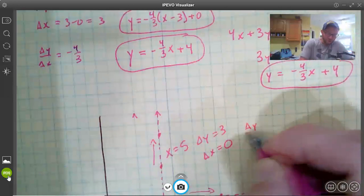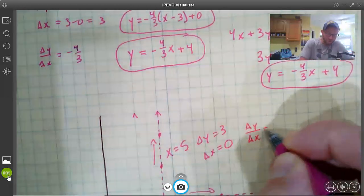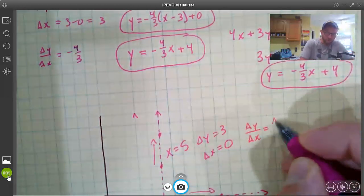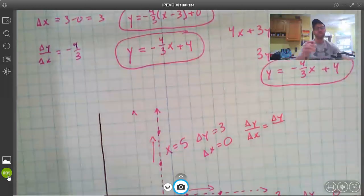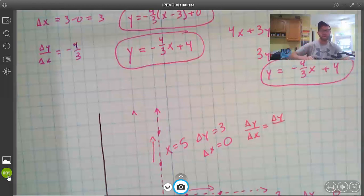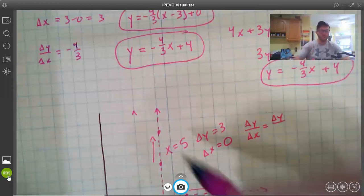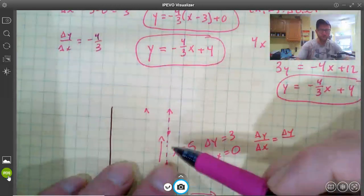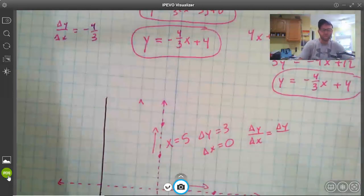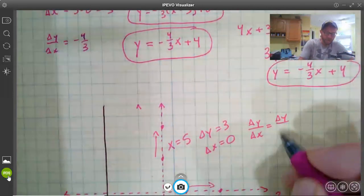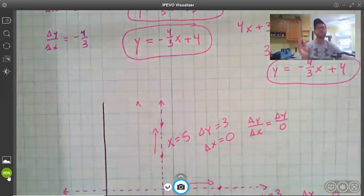So the slope of this line, change in y over change in x, is going to be some sort of change in y, up or down. It will always be different, it might be negative, it could be positive, it could be a big number, a little number, all depends on how far apart or close together I make these two points, but our change in x will always be the same, it will always be 0.